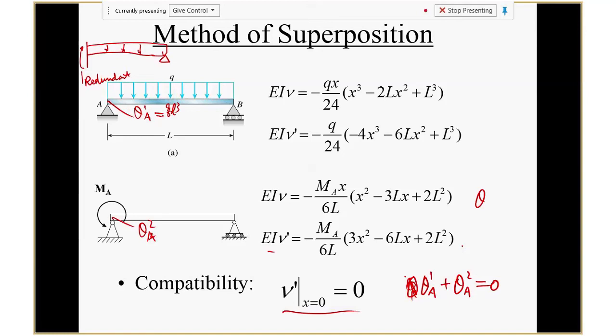That's the alternative way. Is it different because it reduces to a different structure? Which one is easier — reducing to a cantilever beam or reducing to a simply supported beam? This problem, you can see — it's just a little bit different. But sometimes you have multiple loads, and then one choice may be easier than another. Let's move on to another example.